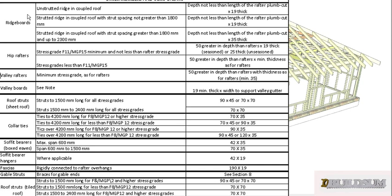So this is Table 7.6, and you can see it covers Ridge Boards, Hip Rafters, Valley Rafters, Valley Boards, Struts, Collar Ties, Feet Bearers, and a few other members. We're going to come back to this table a few times, but the main thing we're worried about is our Collar Ties. It's broken up into basically two sections: up to 4.2 meters and over 4.2 meters. It's also broken up by timber grade — higher than MGP12 or F8/MGP12 and below.